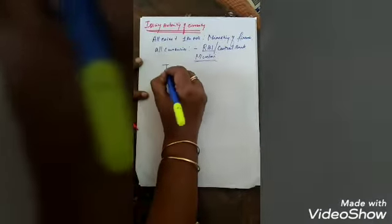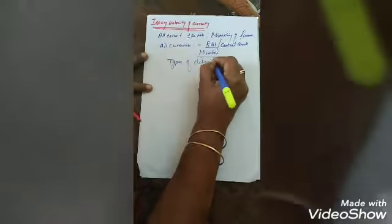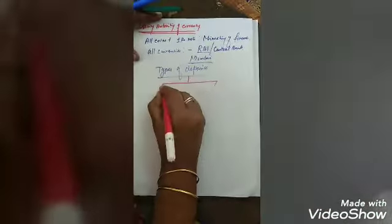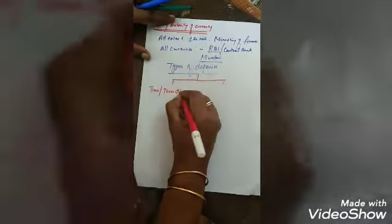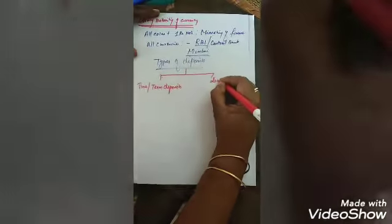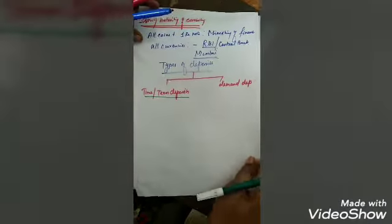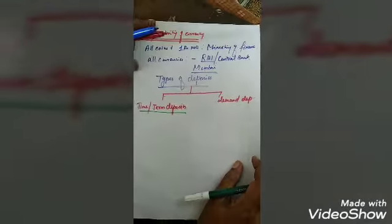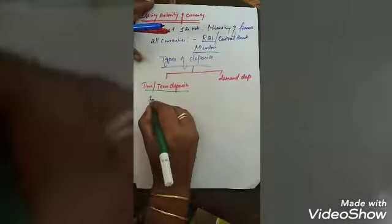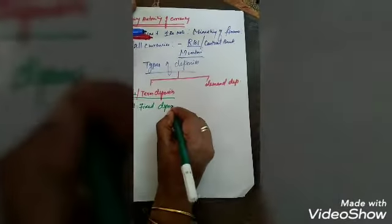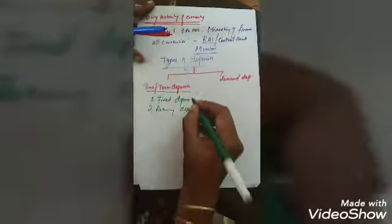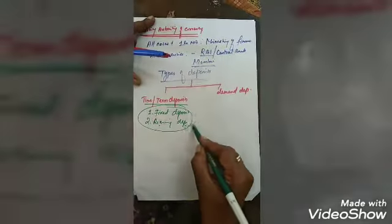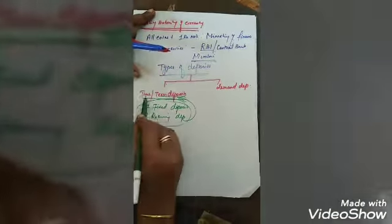The next heading we are going to revise is types of deposits. We can divide deposits into two heads: one is the time or term deposit, and the second is the demand deposit. In time or term deposits, banks give a time or term for the maturity of the deposits. The accounts coming under this category are fixed deposits and recurring deposits.